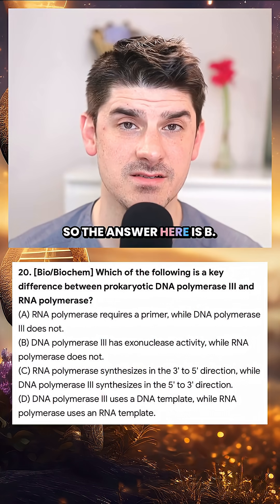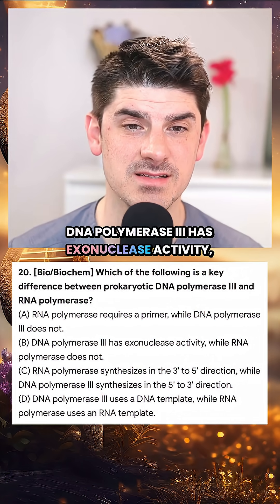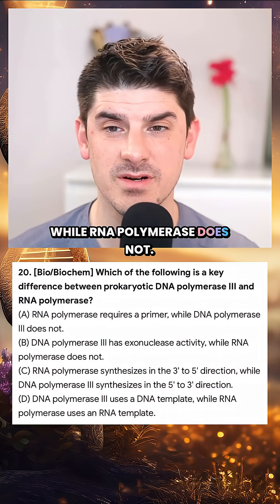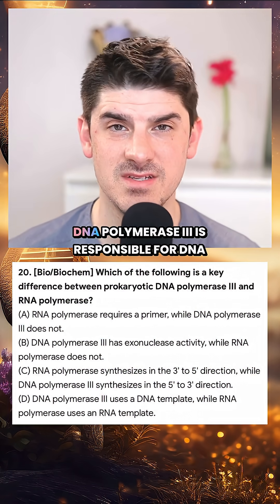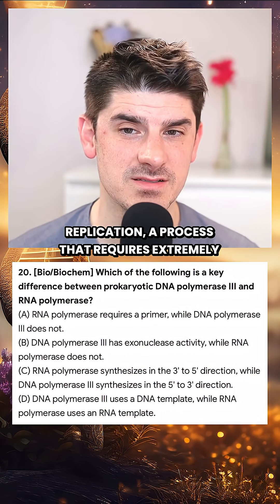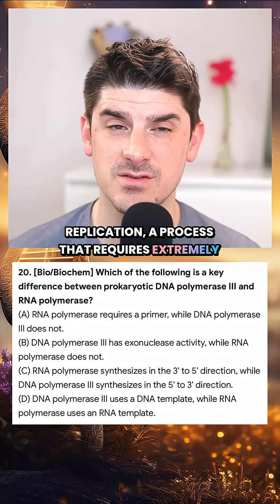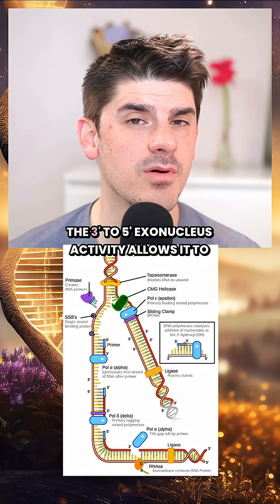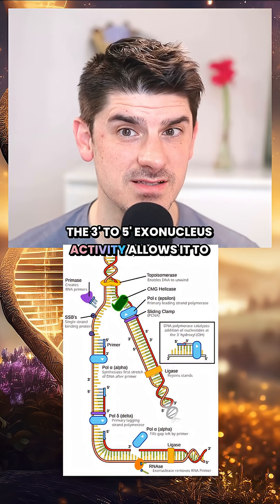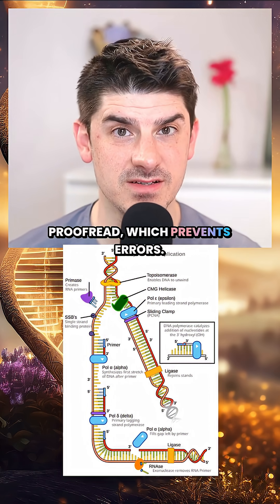So the answer here is B. DNA polymerase 3 has exonuclease activity while RNA polymerase does not. DNA polymerase 3 is responsible for DNA replication, a process that requires extremely high fidelity. 3' to 5' exonuclease activity allows it to proofread, which prevents errors.